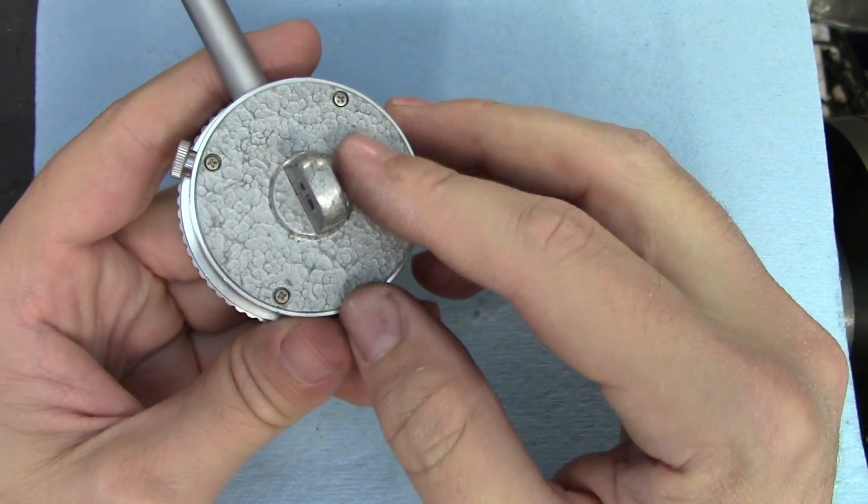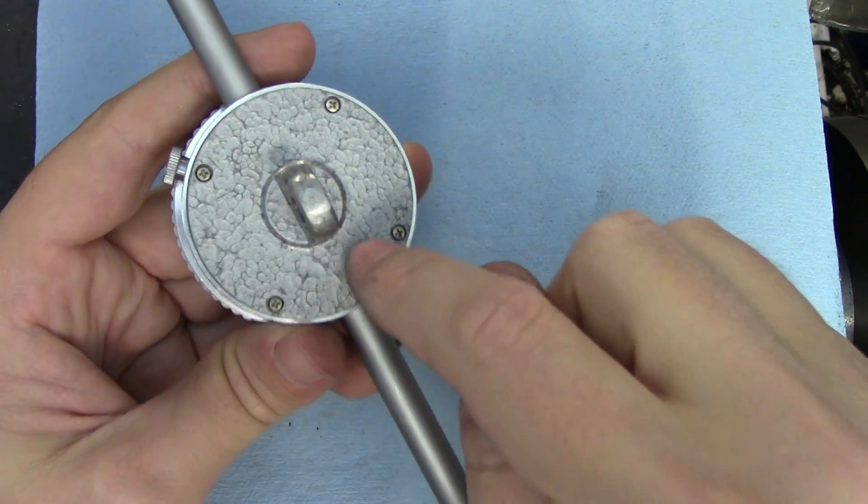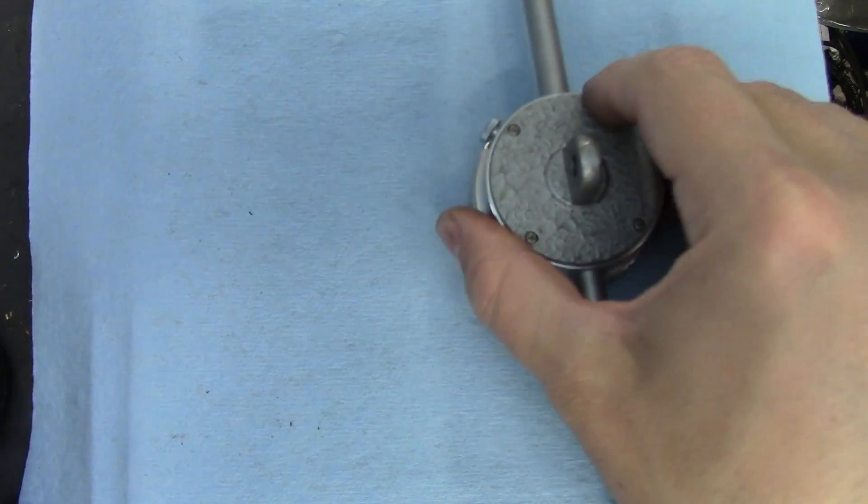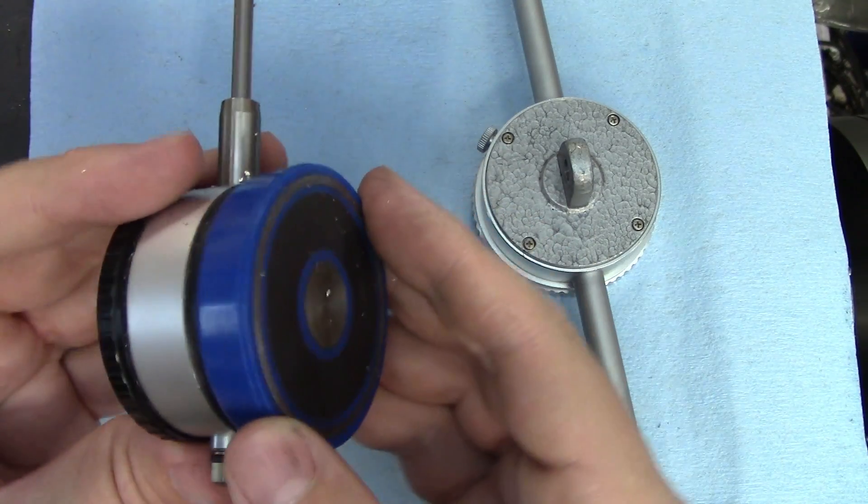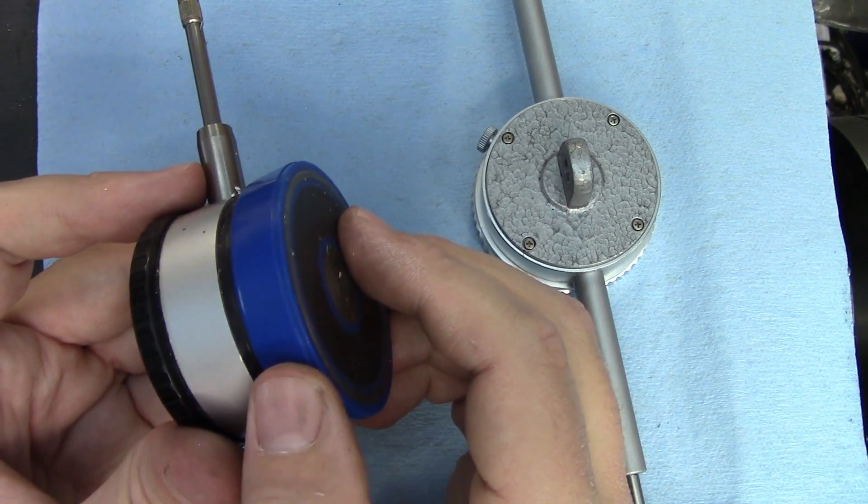If you don't want to use the lug on the back of the indicator, you can take it off by removing these four screws and replacing the stock back with a magnetic one. I have this one stuck to a tool holder at all times so I can indicate parts in the lathe.